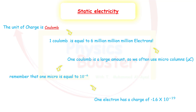One electron has approximately the charge of negative 1.6 multiplied by 10 to the power of negative 19 Coulombs. This number we should memorize. The negative sign is there to remind us that the charge of the electron is negative.